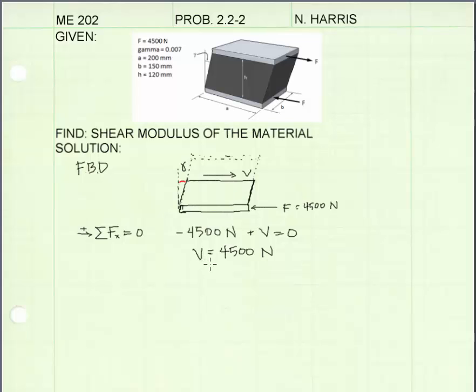Using the equation average shear stress is equal to internal shear force V divided by cross-sectional area A, I can write that the internal shear force is 4,500 newtons, and that's divided by the cross-sectional area of the surface over which it's acting.